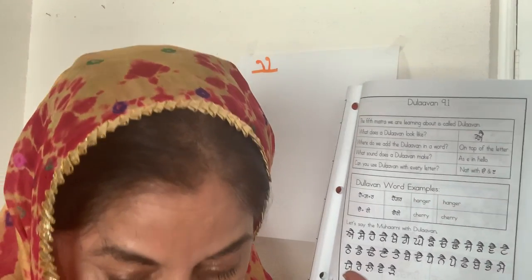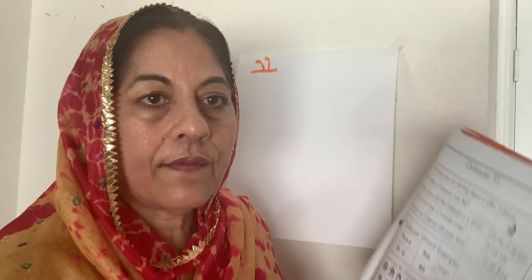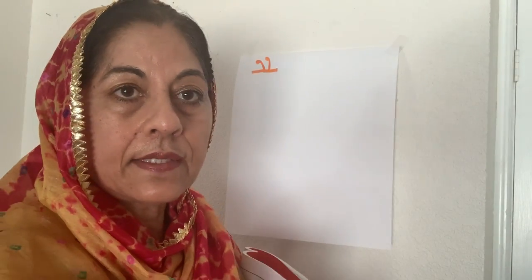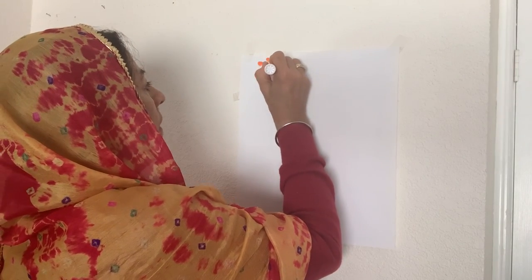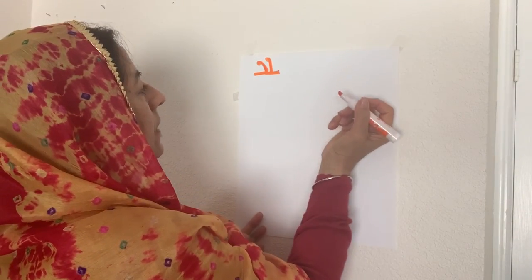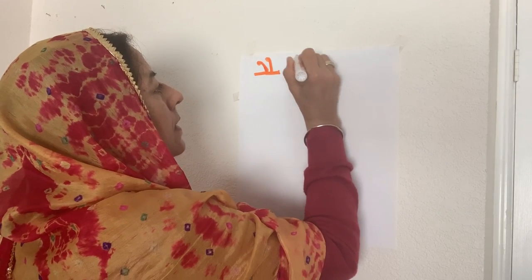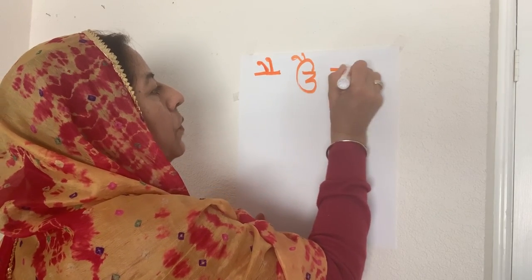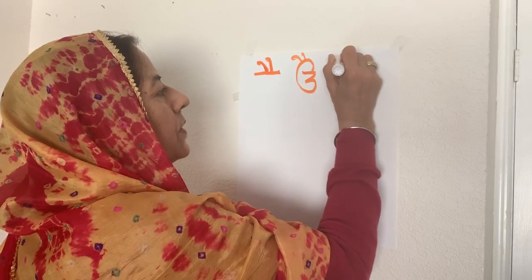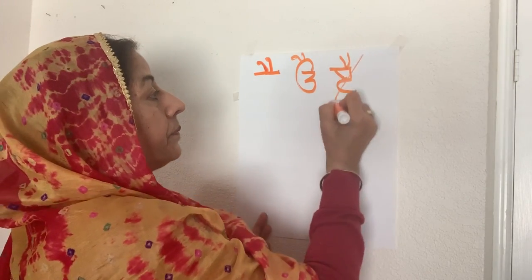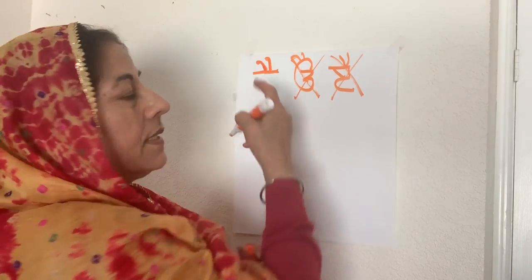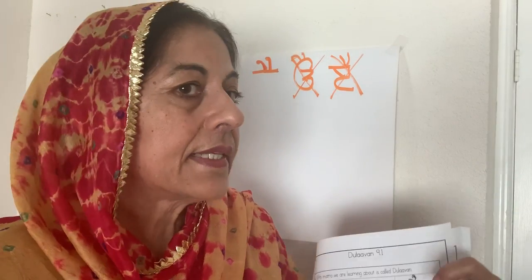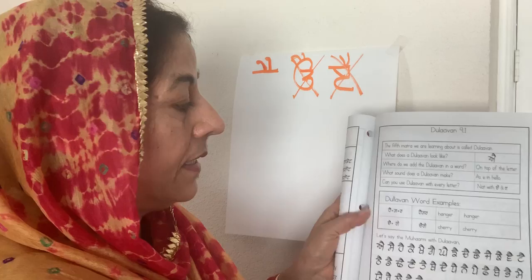A tricky thing about the Dulaama is that there are two letters in the whole of Punjabi script — Uda and Edi — that do not accept the Dulaama. You will never see these letters with the Dulaama. The Dulaama can be used with Adha and all other letters, except for Uda and Edi.